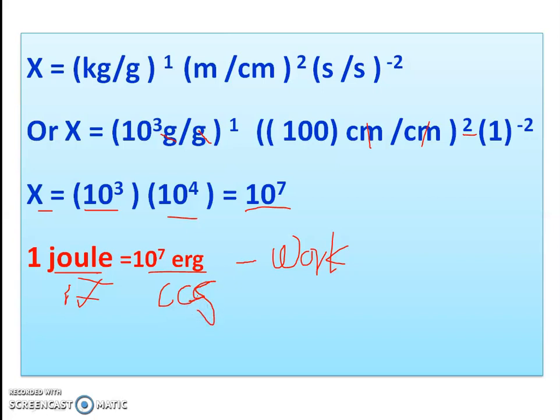For force, the unit is Newton in SI, and dyne in CGS. You can find how many dynes equal one Newton. The physical quantity is the same, just different units in SI and CGS. This is the third use. You can prove that one Joule is equal to 10 to the power 7 erg.